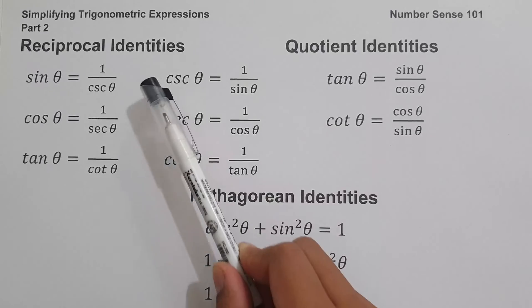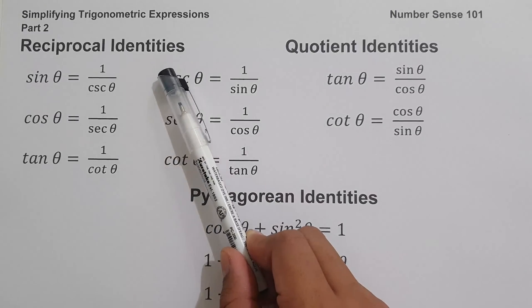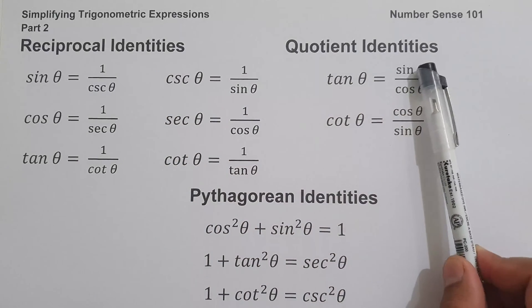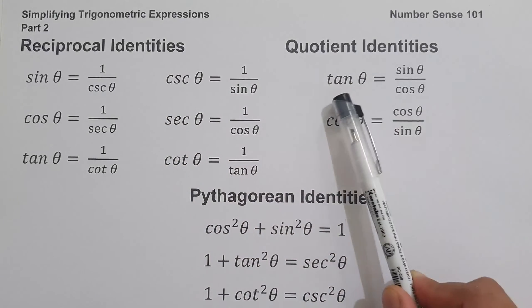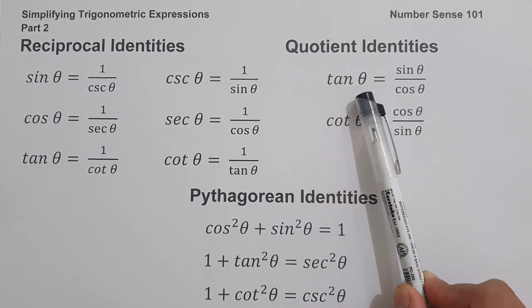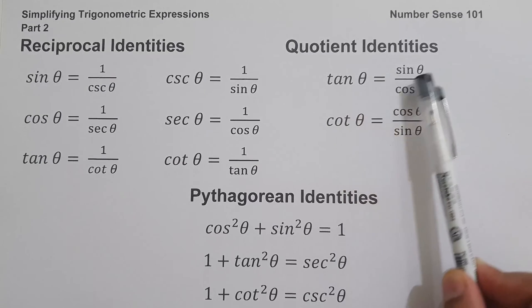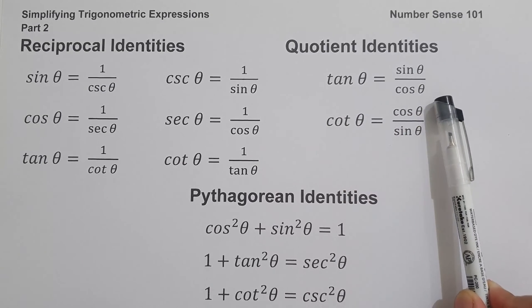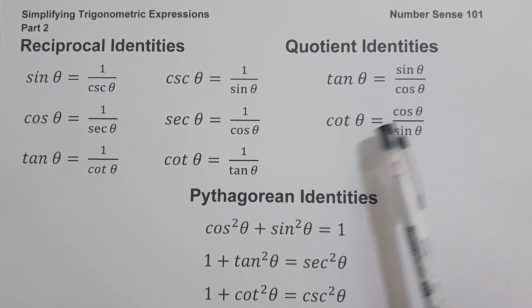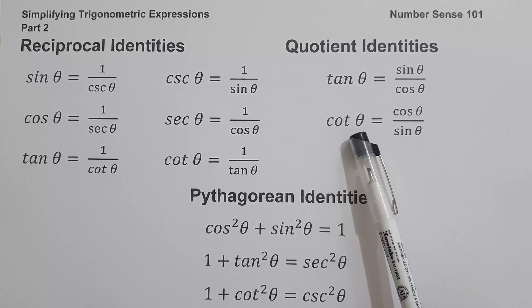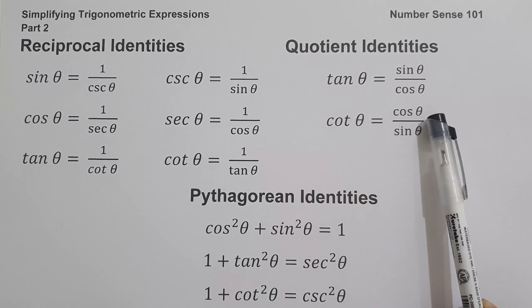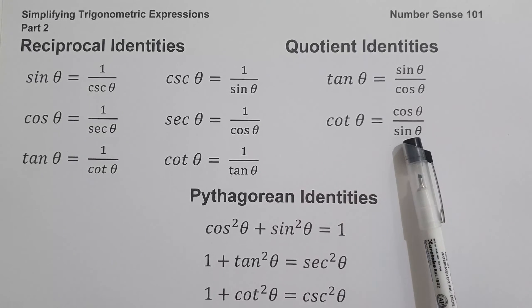Aside from reciprocal identities, we have quotient identities. That is tan θ = sin θ / cos θ, and cot θ = cos θ / sin θ.